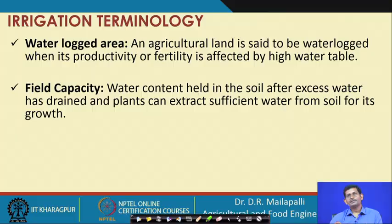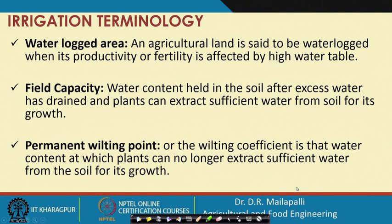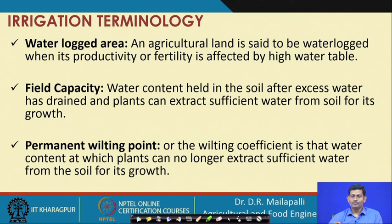After heavy rainfall, water ponds on the surface but recedes over the next day or two through overland flow or percolation. The amount of water remaining in the soil one or two days after heavy rainfall is called the field capacity. The permanent wilting point (wilting coefficient) is the soil water content at which plants can no longer extract sufficient water for growth — at this point plants show wilting. This will be discussed further in upcoming lectures.